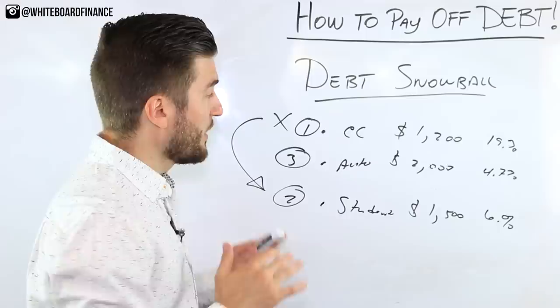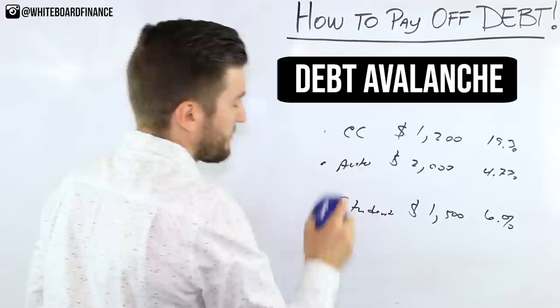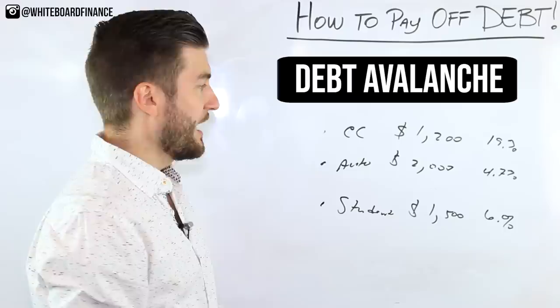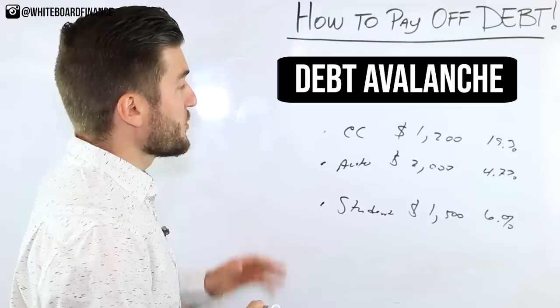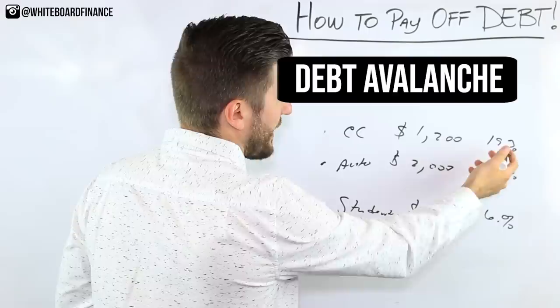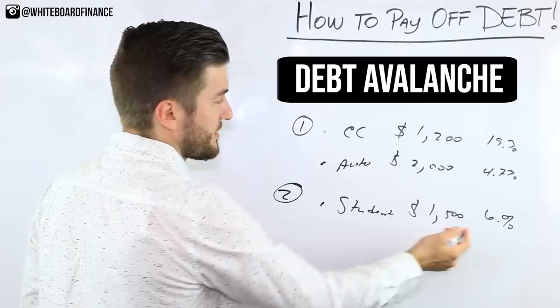With that being said, let's use these same numbers and talk about the debt avalanche. Say this person still has the same amounts and same percentages. However, what the debt avalanche talks about is that you want to pay off your highest interest debts first. The reason for that is because mathematically that's actually the most efficient way to do it. So the credit card has 19% interest, so that's obviously the highest. The student loans have 6% interest, that's the second highest, and the auto loan comes third at 4.7%.